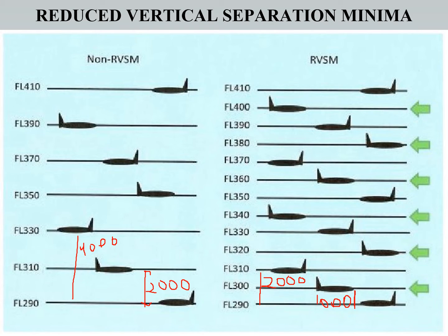Let me explain using this figure. Suppose this is the non-RBSM region — when we don't have efficient altimeters, transponders, or that level of technology. At that time we had to maintain at least 2,000 feet of vertical distance between opposite-heading aircraft and 4,000 feet between same-heading aircraft. But now with RBSM, we have advanced altimeters and autopilots.